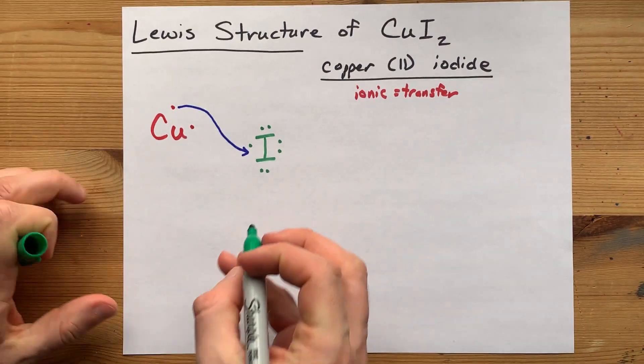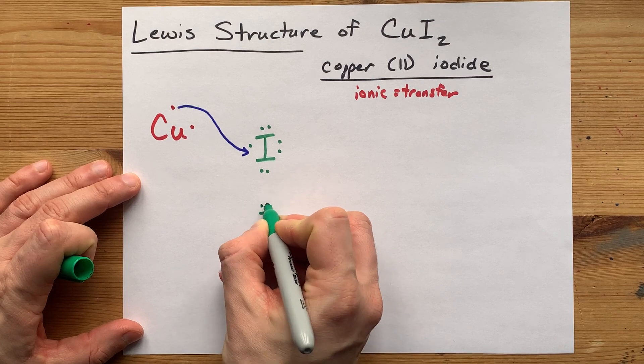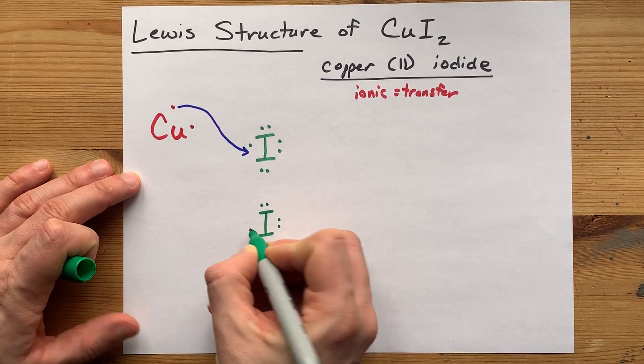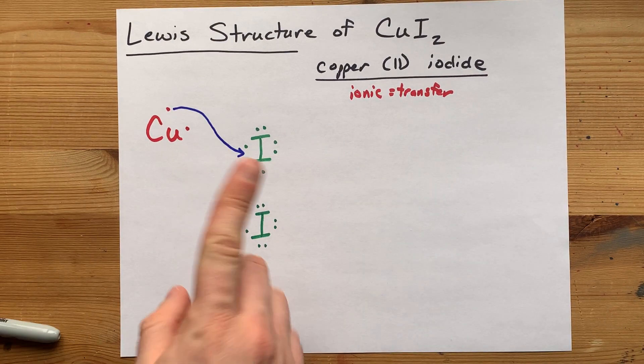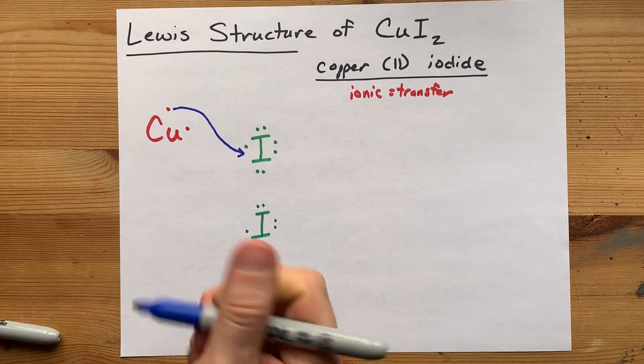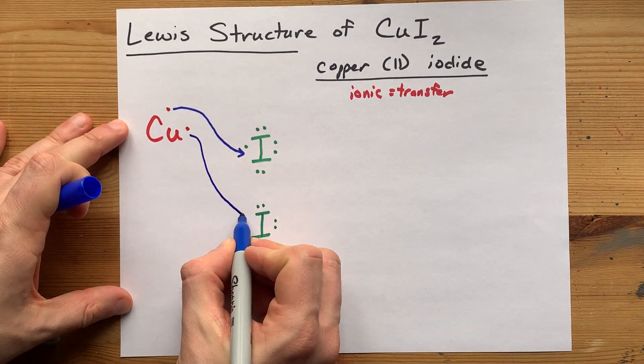The answer is another iodine atom with its seven valence electrons will happily accept it. So I'm going to draw that acceptance happening.